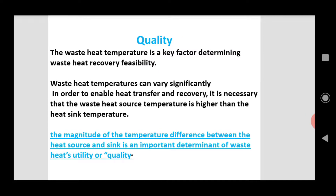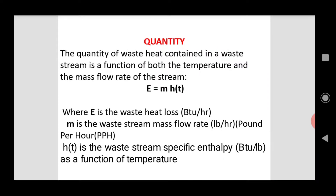High temperature difference means high quality; low temperature difference means low quality. Next, quantity: the quantity of waste heat contained in the waste heat stream is a function of both temperature and mass flow rate. Mass flow rate is a key factor — the quantity is a function of both temperature and mass flow rate of the exhaust gases. So the energy E is equal to M (mass flow rate) times the relevant heat parameters.